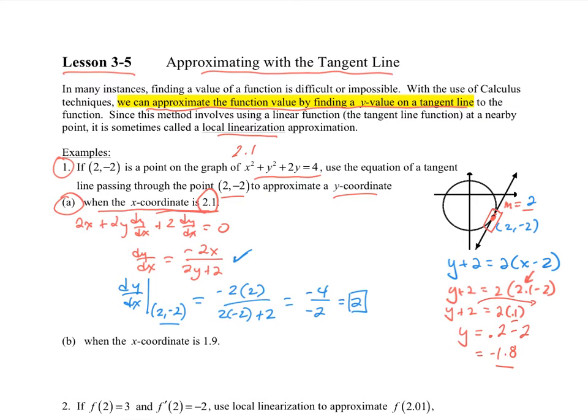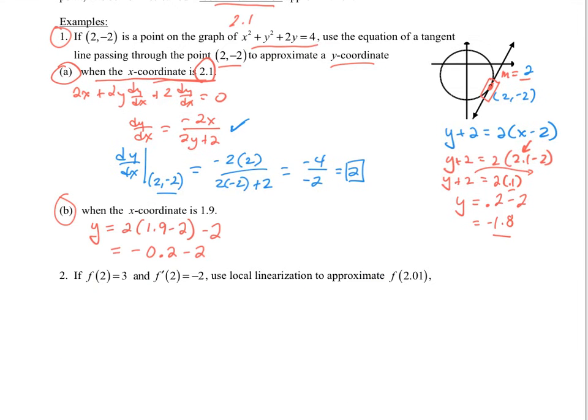If the x-coordinate now for part b is 1.9, why don't you pause this and try it yourself. So plugging in 1.9 here, I'm going to get -0.1 inside, multiply that by 2, I'm going to get -0.2 - 2 would put me at -2.2. This is my estimate of the curve at x = 1.9.